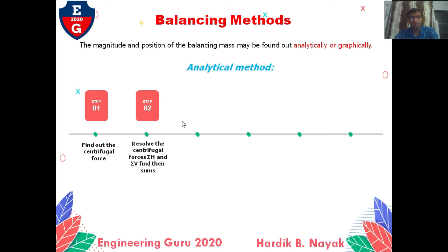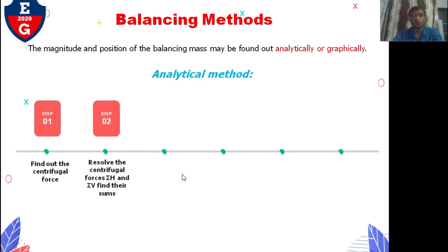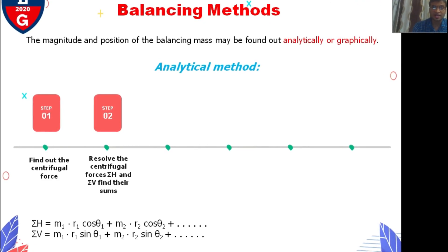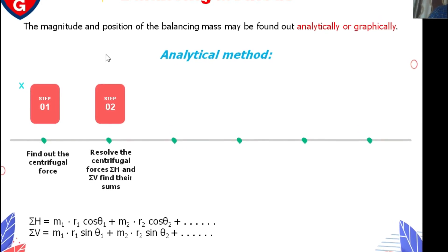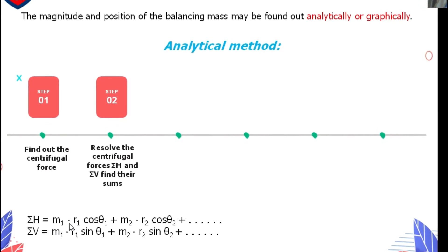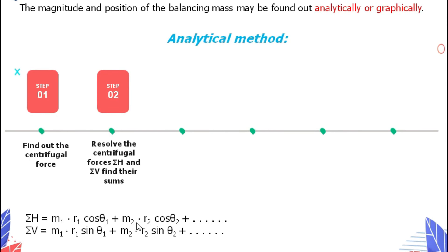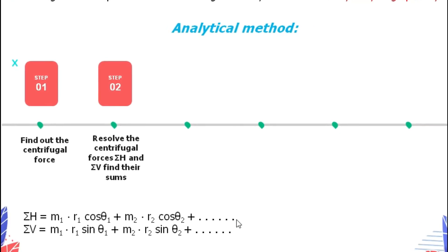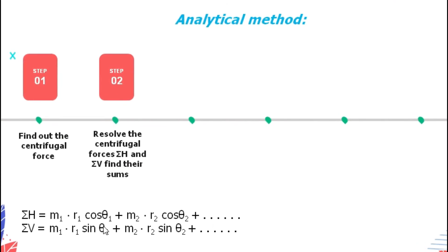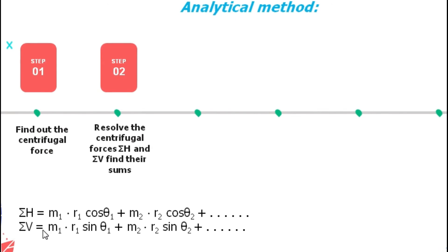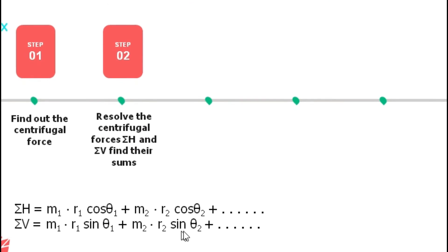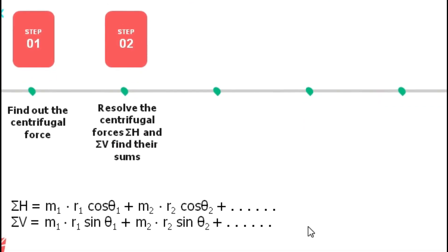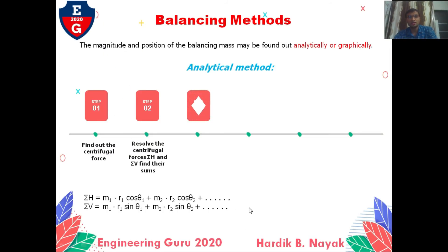Second step: resolve the centrifugal forces into summation of H and summation of V and find their sums. In this second step, we have to find summation of H: that is M1 R1 cos theta 1 plus M2 R2 cos theta 2, up to theta 4. Then summation of vertical forces equals M1 R1 sin theta 1, M2 R2 sin theta 2, and find out for 3 and 4 also.